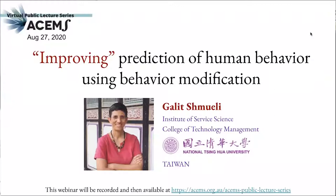Galit Shmueli is Distinguished Professor and Director of the Institute of Service Science at the National Tsinghua University in Taiwan. Prior to that, she's worked in India, Bhutan, the United States and Israel. She was a Chair Professor of Data Analytics at the Indian School of Business and has been Associate Professor at the University of Maryland Smith School of Business. She's the Founding Editor-in-Chief of INFORMS' journal on data science. Her research focuses on statistical and data mining methods for contemporary data structures, with a focus on statistical strategy and issues related to how data analytics are used in scientific research. Her main fields of application are information systems, electronic commerce, data science, data surveillance and healthcare with a focus on human behaviour.